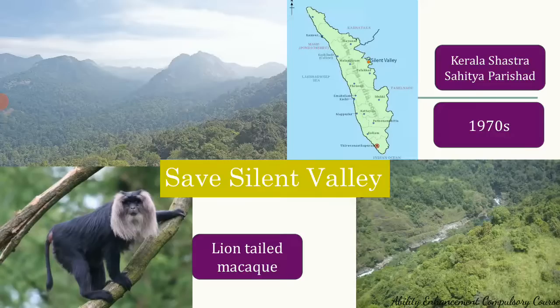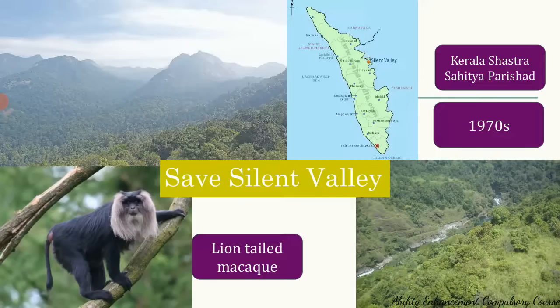The conservationists put forward very scientific arguments. This patch was one of the last few tropical evergreen forest patches remaining in the Western Ghats region, extending from Maharashtra to the tip of Tamil Nadu, and it was one of the last pristine, untouched patches. Any development project there would harm its biodiversity. It was also argued that 40% of Kerala's power generation was already being given to Karnataka and Tamil Nadu, so even if the dam were built, it would not contribute significantly to Kerala.